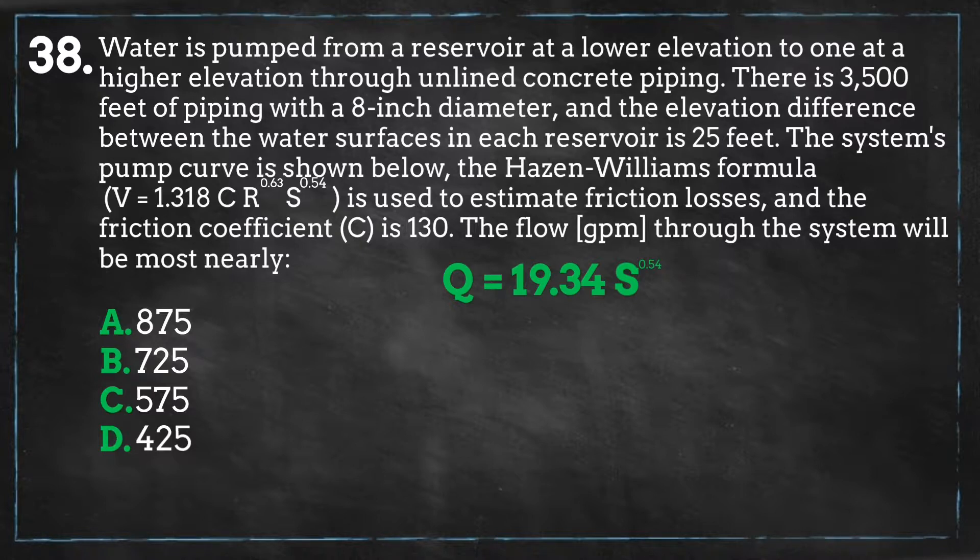So since we will be plugging in various flow rates, let's rearrange the equation to solve for the slope, and we get the following.